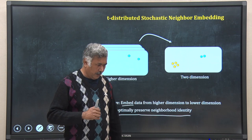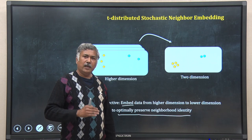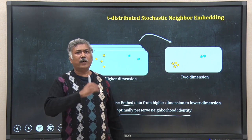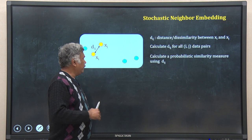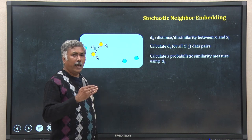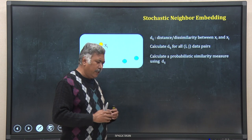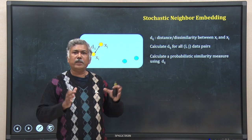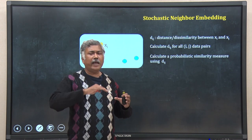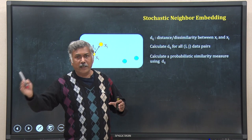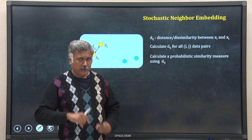How should we keep focus on the neighborhood rather than on the global information, and try to embed by maintaining the neighborhood relationship? To understand how T-SNE works, we first have to understand the first version of this method called SNE — Stochastic Neighbor Embedding. To explain SNE, I will take a two-dimensional dataset and imagine embedding it in one dimension.